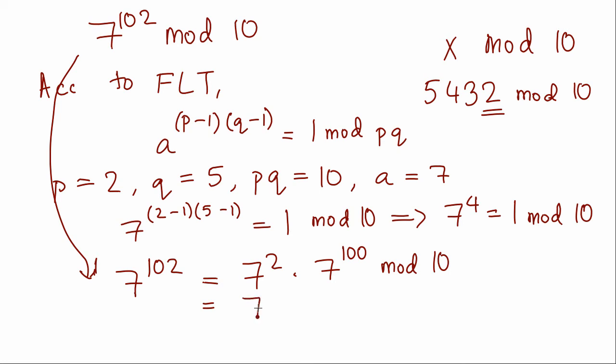We can write 7^102 as 7^2 · 7^100 mod 10, where 7^100 = (7^4)^25 mod 10. Since 7^4 = 1 mod 10, this simplifies.